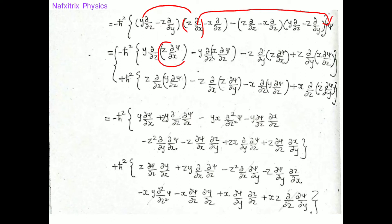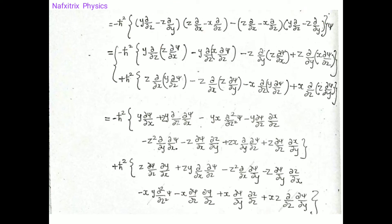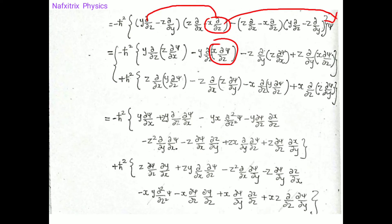In a similar manner, the next term involves y·(∂/∂z) and x·(∂/∂z) operated on the wave function psi. Due to the negative sign present, we get a minus for that term.